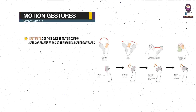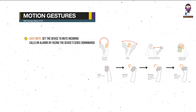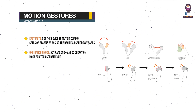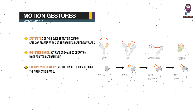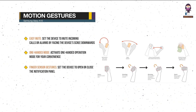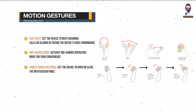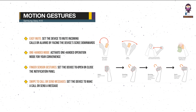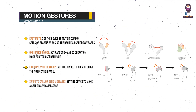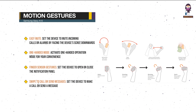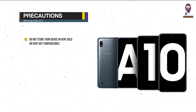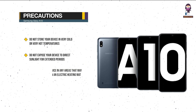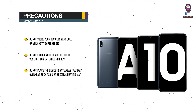Motions and Gestures — Easy Mute: set the device to mute incoming calls or alarms by facing the device's screen downwards. One-handed Mode: activate one-handed operation mode for your convenience when using the device with one hand. Finger Sensor Gestures: set the device to open or close the notification panel when you swipe upwards or downwards on the fingerprint recognition sensor. This feature is not available when the sensor is detecting your fingerprint. Swipe to Call or Send Messages: set the device to make a call or send a message when you swipe to the right or left on a contact or a phone number in the Phone or Contacts app. Precautions: do not store your device in very cold or very hot temperatures. Do not expose your device to direct sunlight for extended periods. Do not place the device in any areas that may overheat, such as on an electric heating mat.